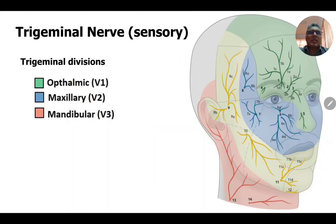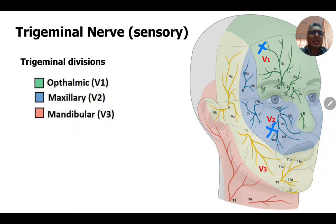In this diagram you can see the skin of the face supplied by the three divisions of the trigeminal nerve: the ophthalmic division, maxillary division, and mandibular division. The forehead area is supplied by the ophthalmic division, the upper cheek and upper lip area is supplied by the maxillary division, and the lower cheek and lower lip area is supplied by the mandibular division.